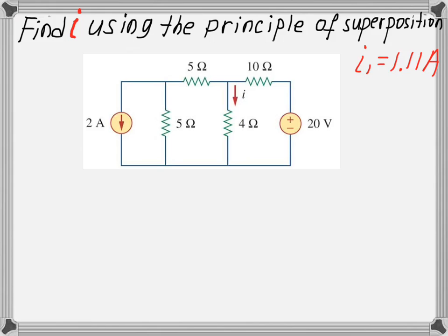Now let's repeat the procedure by turning off the 20V power source. Removing the 20V source creates a short circuit, so we draw a short in its place. We now need to analyze this new circuit to find the current through the 4 ohm resistor. Because this is the second step, we'll name this current I2.